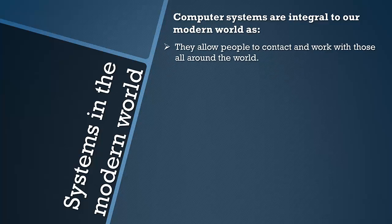Computer systems allow people to contact and work with those all around the world. This could be at a small level like family members contacting each other, or it could be global businesses meeting each other via Skype or web chats around the world, which obviously saves a lot of money on transport costs, and it connects the world in a very different way.